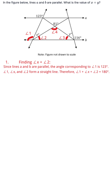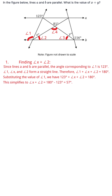Angles 1, x, and 2 form a straight line. Therefore, angle 1 plus angle x plus angle 2 is equal to 180 degrees. Substituting the value of angle 1, we have 123 degrees plus angle x plus angle 2 equals 180 degrees. This simplifies to angle x plus angle 2 equals 180 minus 123 equals 57 degrees.